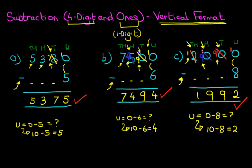It's the same principle no matter how many digits there are. So that is subtraction of a four-digit number and ones — a one-digit number — using the vertical format.